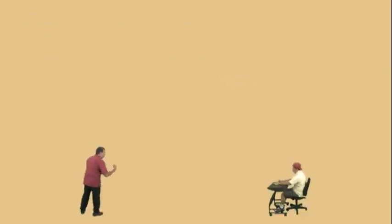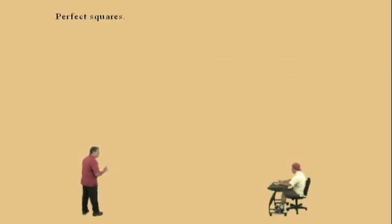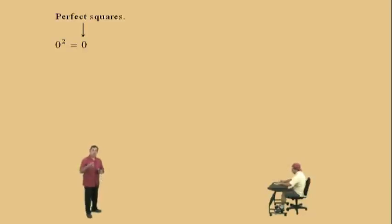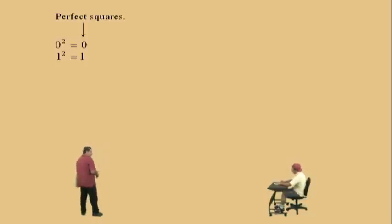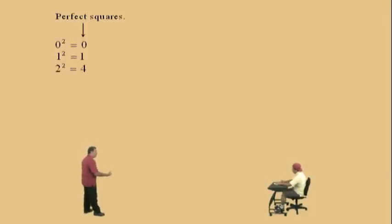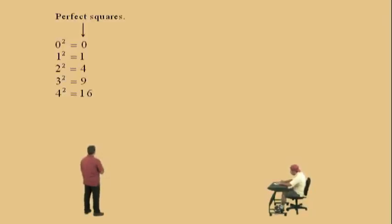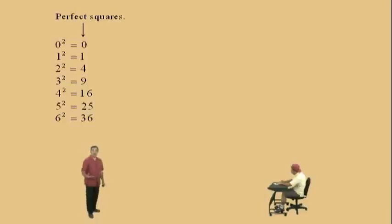So the square root of 16 is 4 because 4 squared is 16. Let's look at some other square roots. Before we move on, let's look at what we call perfect squares. Charlie, what's 0 squared? 0. That's right. So 0 is considered a perfect square, which means when you're asked what is the square root of 0, the answer will be 0 because 0 squared is 0. It's so easy it's confusing. Now, 1 is a perfect square because 1 squared is 1. Therefore, the square root of 1 will be 1. And 4 is also a perfect square because 2 squared is 4. Other perfect squares are 9 because 3 squared is 9, 16 because 4 squared is 16, 25 because 5 squared is 25, and 36 because 6 squared is 36. And of course there's a whole lot more. We'll stop there for now.